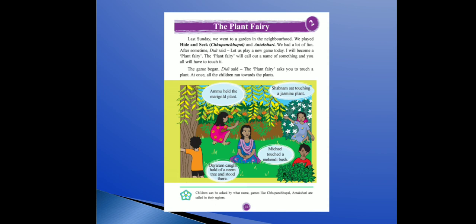Sabnam jasmine plant pe jaake baith jaati hai aur use touch kar leti hai. Dayaram neem ke tree ko pakad ke khada reh jaata hai. Aur Michael mendi ke plant ko jaake touch karta hai. Aap yeh sab picture mein dekh sakte ho.